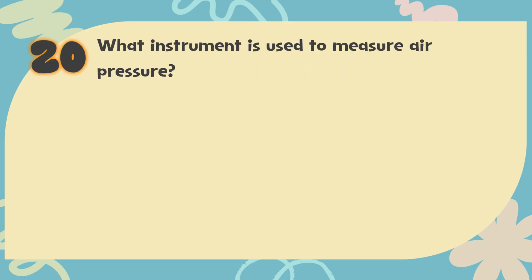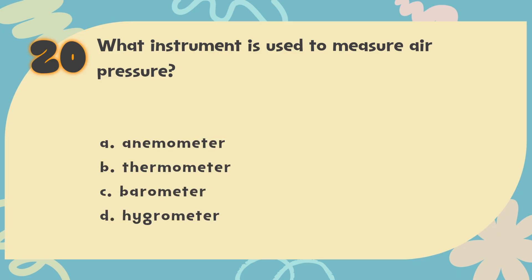Number 20. What instrument is used to measure air pressure? The choices are: A. Anemometer. B. Thermometer. C. Barometer. D. Hygrometer.